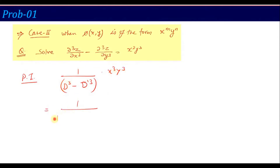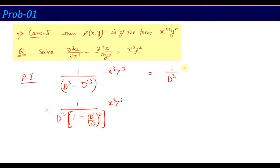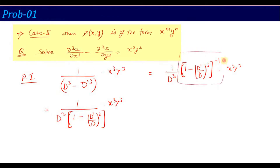Taking D³ common from the denominator gives 1 over D³ into (1 minus D'/D)³. Moving the bracket term to the numerator with power minus 1, we get: 1/D³ into (1 minus D'/D)³ to the power minus 1, into x³y³. This inverse expression is solved using binomial expansion. The formula needed here is: (1 minus x)^(−1) = 1 + x + x² + x³ + ... In our case, x is (D'/D)³.